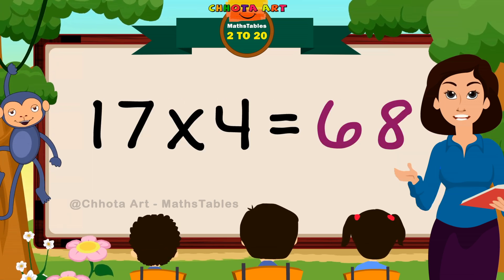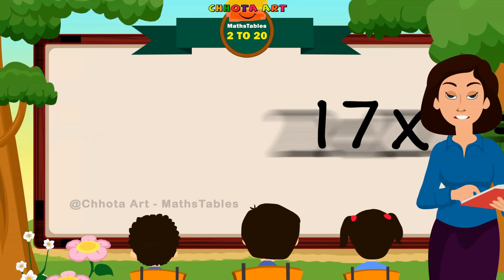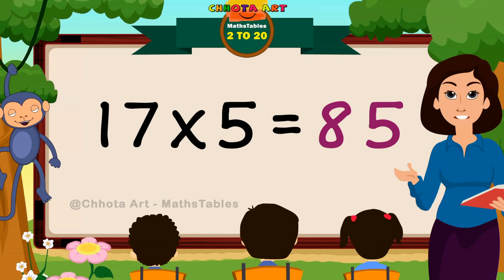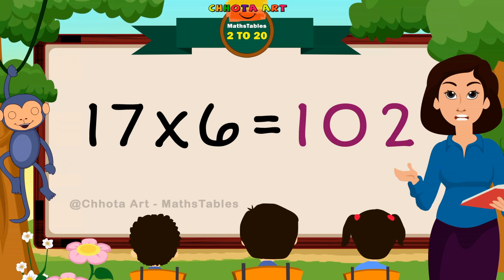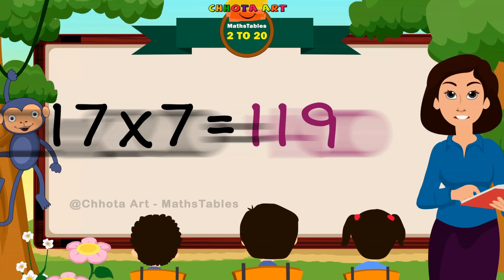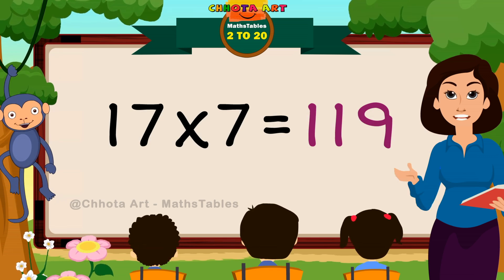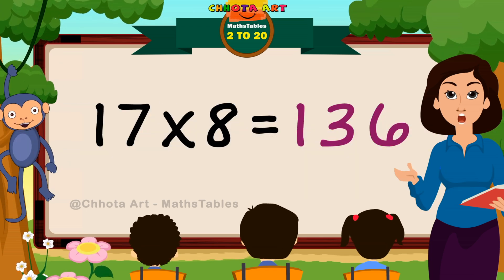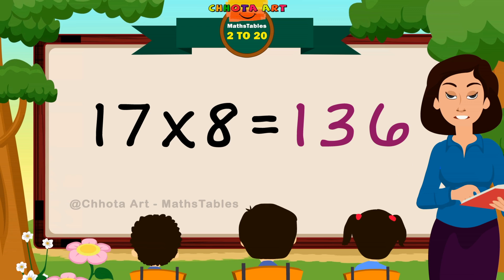Seventeen fours are sixty-eight. Seventeen fives are eighty-five. Seventeen sixes are hundred and two. Seventeen sevens are hundred and nineteen. Seventeen eights are hundred and thirty-six.